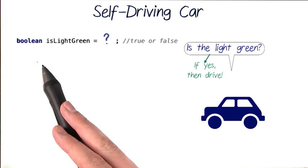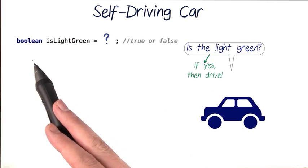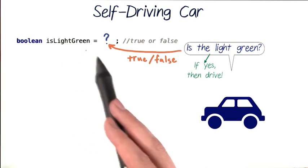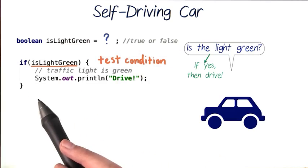We first need to know if the light is green. We can store this information as a Boolean variable, which I'll call isLightGreen. This will either be true or false. Then let's create our if statement.